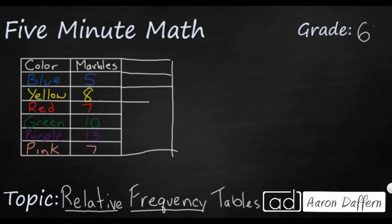What you're going to need to do is add a little bit of something to this, and we're going to call it the percentage. The relative frequency is just a different way to represent data. Right now we have a jar of marbles and there's 5 blue, 8 yellow, 7 red, 10 green, 13 purple, and 7 pink.